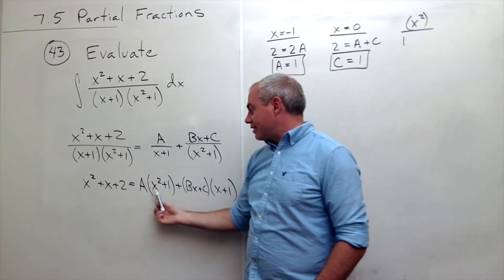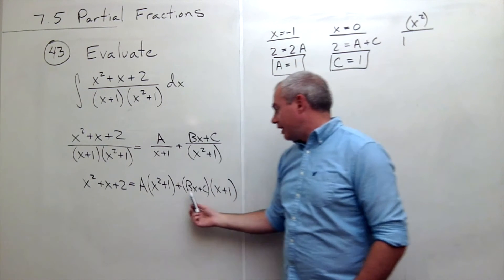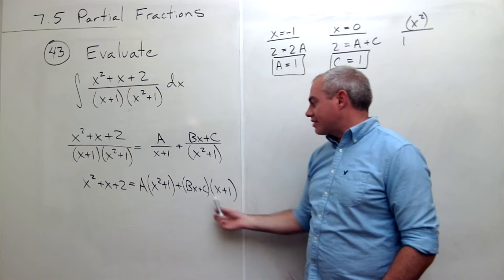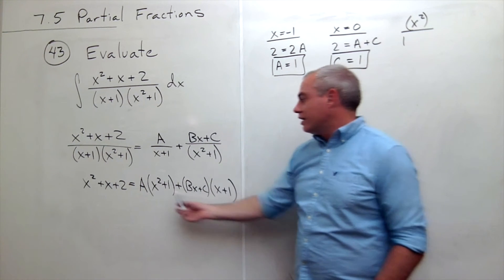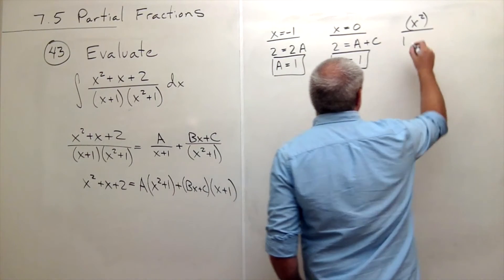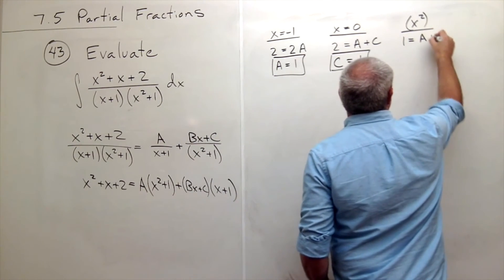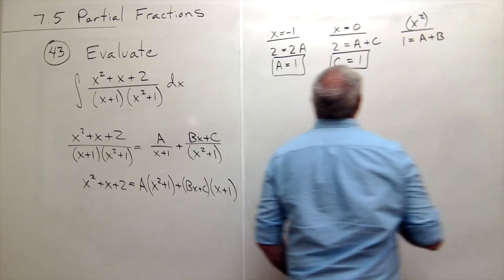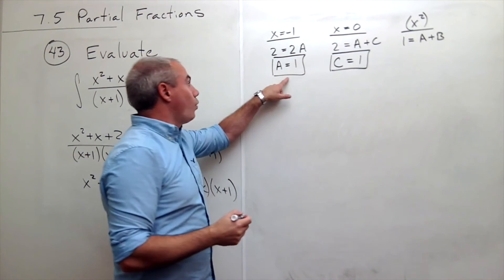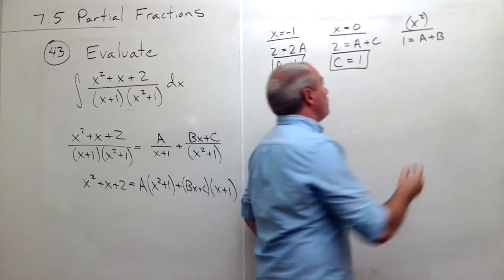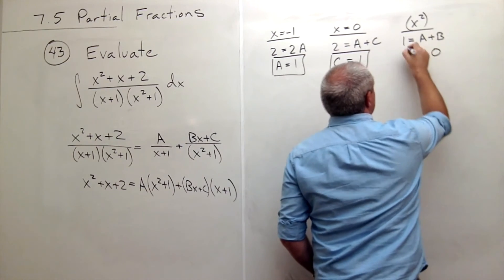Well, there are ax squareds here, and there's a bx times x, so a bx squared here. So it's a plus b, so this is equal to a plus b. a, we know, is 1. So b is equal to 0.